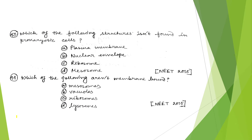The first question asks: which of the following structures is not found in prokaryotic cells? The options are plasma membrane, nuclear envelope, ribosome, or mesosome. The correct answer is option B — nuclear envelope. In prokaryotic cells, there is no definite nucleus. There is a nucleus-like structure with double-stranded DNA, known as the nucleoid, which has no envelope around it. So prokaryotes have no nuclear envelope.